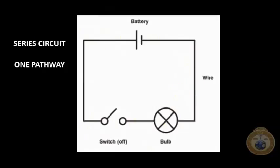There's only one pathway. Sorry, the mouse is acting a little weird. So there's only one path for the electrons to flow. That is the series circuit.